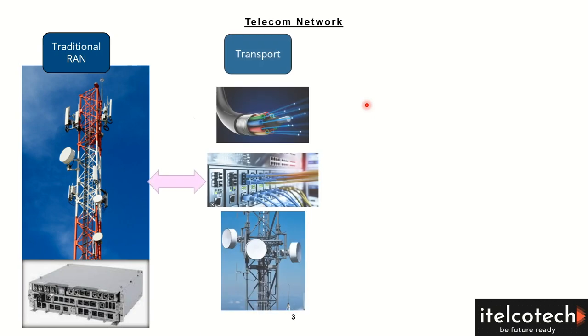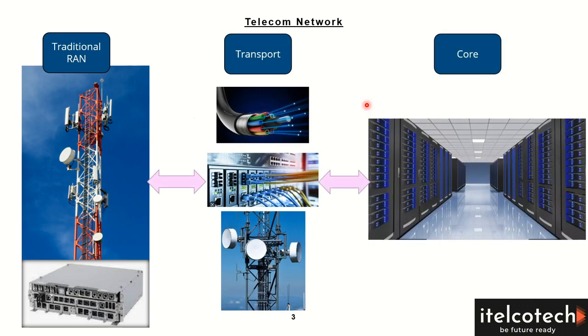Let's visualize the 5G network through different snippets I have taken for the radio access network, for the transport network, as well as for the core network. The traditional radio access network looks like where we have a baseband unit right at the bottom of the mast, and then we have antennas on the top of the mast.